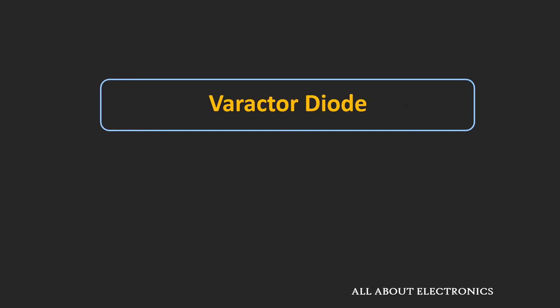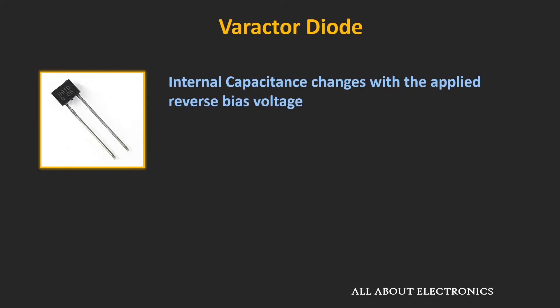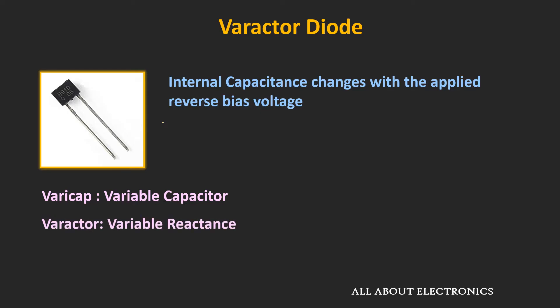Hey friends, welcome to the YouTube channel all about electronics. In this video, we will learn about the varactor diodes. Varactor diodes are one type of P-N junction diodes whose internal capacitance can be changed by applying the reverse bias voltage. These diodes are also known as varicap diodes — the term 'varicap' refers to variable capacitance, while 'varactor' refers to variable reactance.